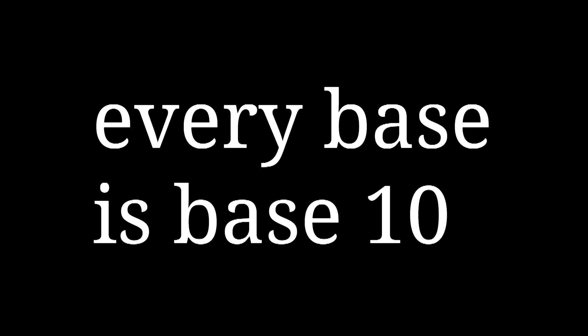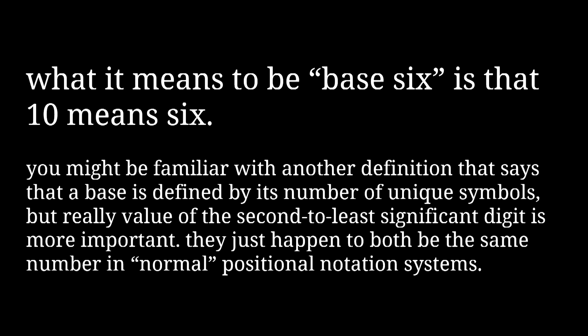Almost everyone uses base 10 to count things. That's usually written as base one zero. And if you're used to seeing numbers written in base 10, writing base 10 as base one zero is completely normal and understandable. But the thing is, every base is base one zero — by definition, in any given base, one zero is the way you write the base itself.